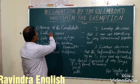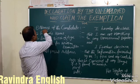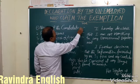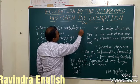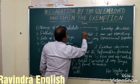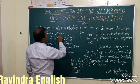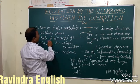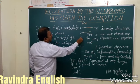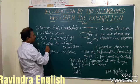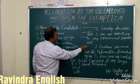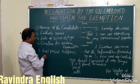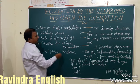I am going to explain the fields: the name of the candidate and the father's name, the date of birth, the center for the written examination, and the full postal address.